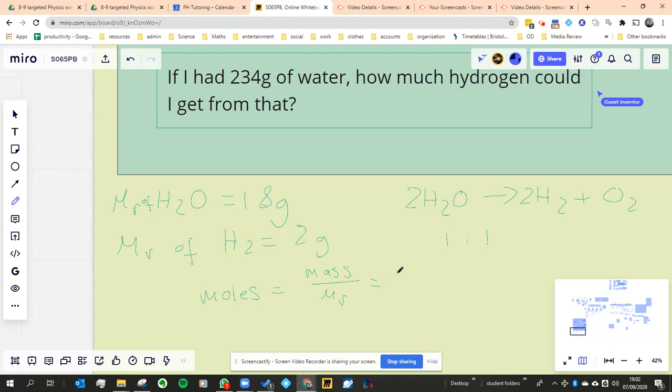So the mass that they've given us is 234 grams. I'm going to just make my notes a bit clearer here. Moles of water: 234 grams divided by the molar mass of water, which is 18. We've already done this anyway, so we know the answer is going to be 13 moles.